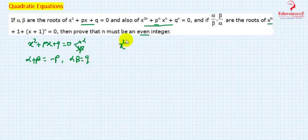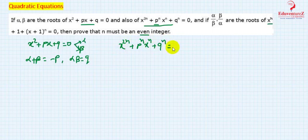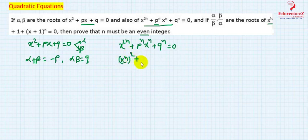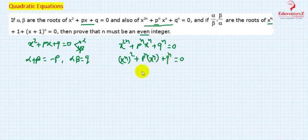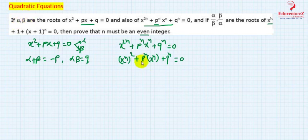The second equation is x to the power 2n plus p to the power n times x to the power n plus q to the power n equal to 0. This can be written as (x to the power n) squared plus p to the power n times (x to the power n) plus q to the power n equal to 0. So if alpha and beta are roots, then x to the power n is quadratic, meaning alpha to the power n and beta to the power n are the roots of this quadratic.